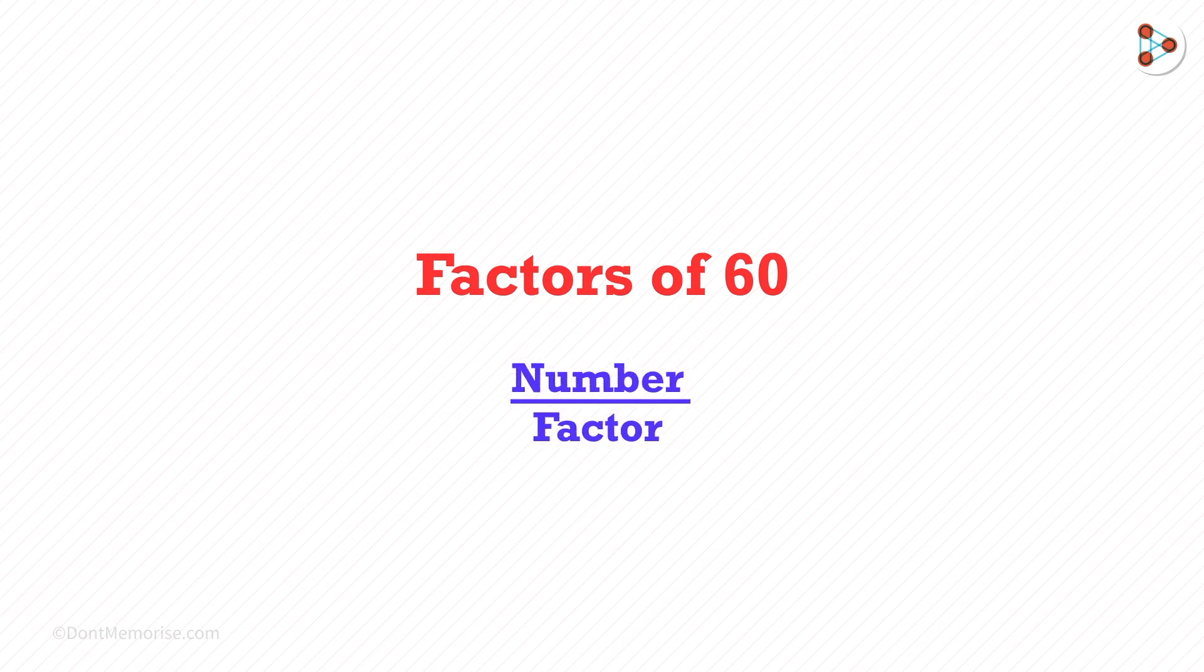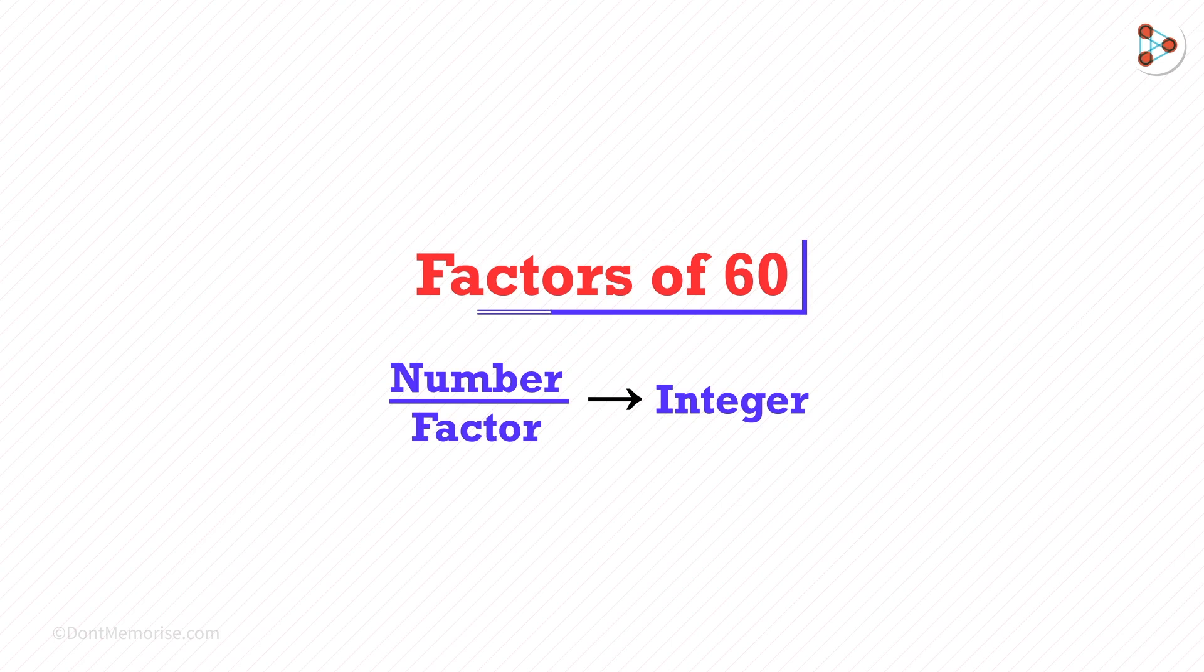Basically, you divide the number by smaller numbers, and if the answer is an integer without a remainder, those are factors. How can you find out factors in 60?